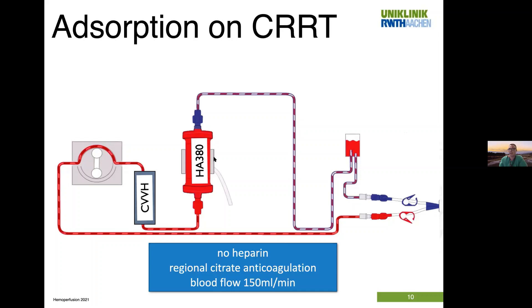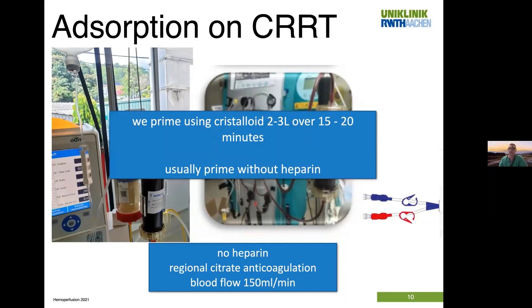You have your dialysis filter and the cytokine absorber just in line with your dialysis machine — these machines are not bothered by this, as the flow resistance of the cytokine absorber is so low that it works like a charm. When you prepare it, you prime using crystalloids, 2 to 3 liters over 15 to 20 minutes, usually without heparin — whether the patient is on ECMO or on citrated CRRT.